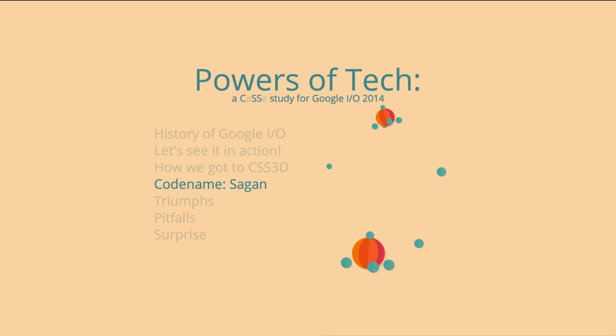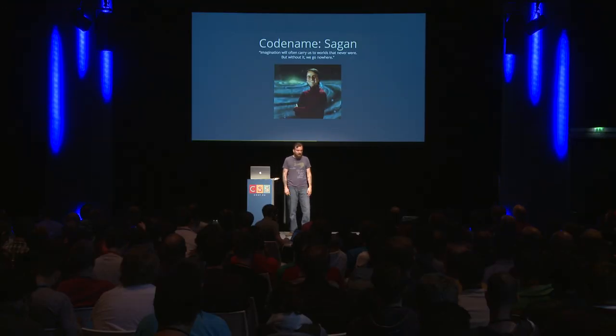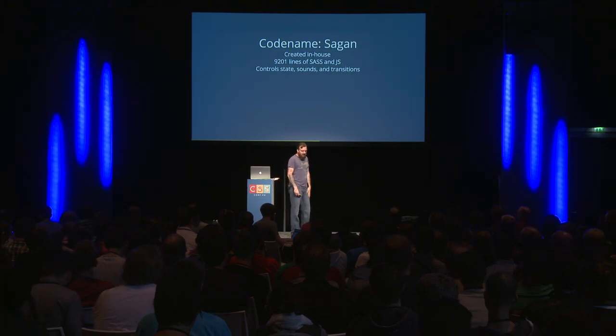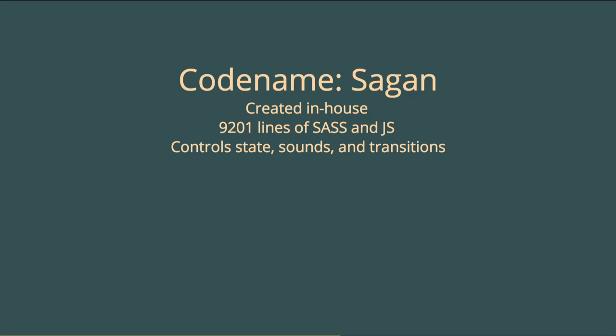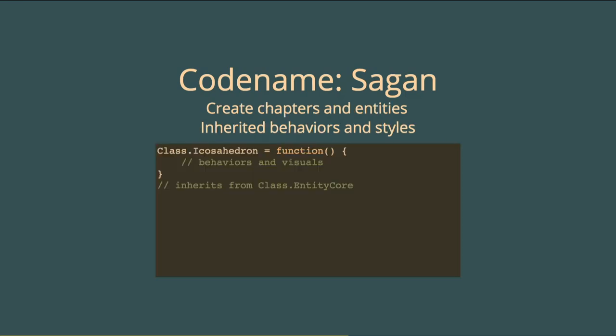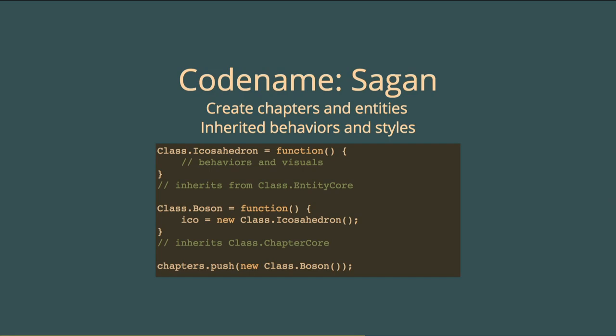We had a lot of state to keep track of — transitions, and if you go look at it, it's got sound. So we created a framework and we named it after Carl Sagan. You saw Voyager in there, and I've always wanted to name something after Carl Sagan. We created it — it's got 9,200 lines of Sass and JavaScript. It controls the state, the sounds, and the transitions. For the icosahedron you saw in that first boson chapter, you create your class, it inherits behaviors and transitions, you create your chapter, add entities that can have entities inside them, put it in the chapter stack, and walk through those Powers of 10.